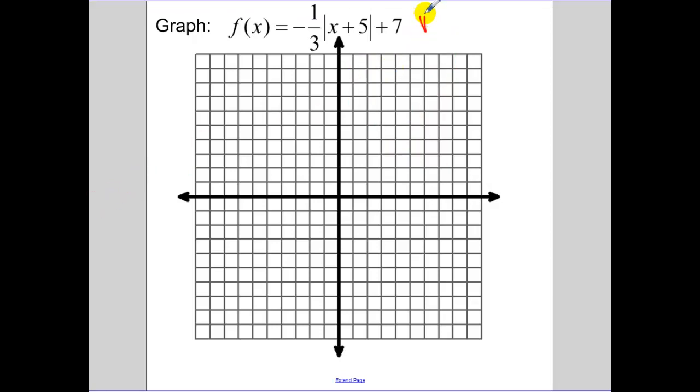Now here, our vertex, put it in standard form. So you have to make this x minus a negative 5. So our vertex is negative 5, positive 7. So negative 5, positive 7.